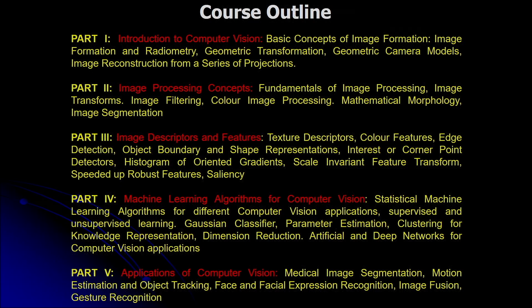Part 3 is image descriptors and features, covering texture descriptors, color features, edge detection, object boundary and shape representations, and advanced features like HOG features, SIFT features, SURF features, and the concept of saliency. Part 4 covers machine learning algorithms for computer vision — supervised and unsupervised algorithms, artificial neural networks, and deep networks. Part 5 covers applications of computer vision, including medical image segmentation, motion estimation and object tracking, face and facial expression recognition, image fusion, and gesture recognition.